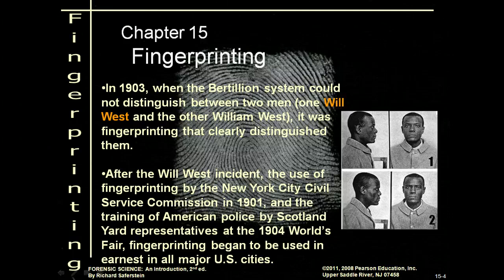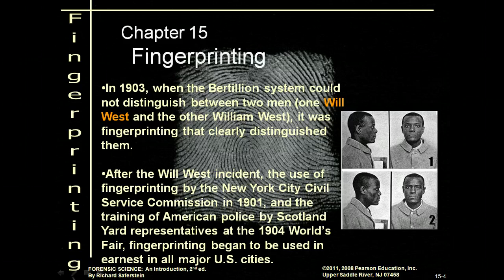What caused the big shift was the Will West case. There were two men in Leavenworth Prison charged at different times who had the exact same measurements using anthropometry, so it didn't quite work. However, they had different fingerprints. It most likely turned out that Will and William West were twin brothers — twins do not have the same fingerprints, but they would have similar or the same measurements. Around 1904, Scotland Yard came to the World's Fair and trained law enforcement on the use of fingerprints, and that's when it really took root in America.